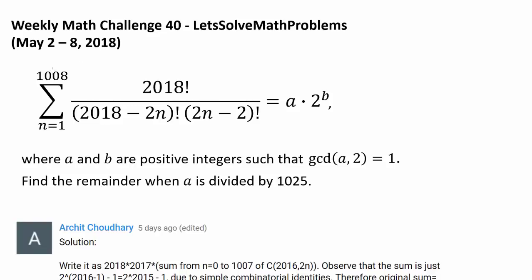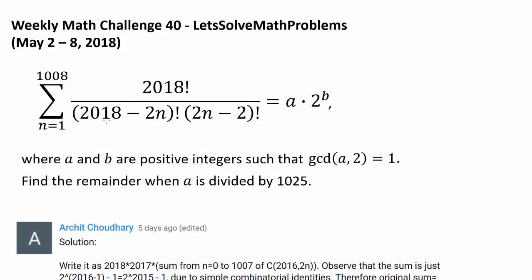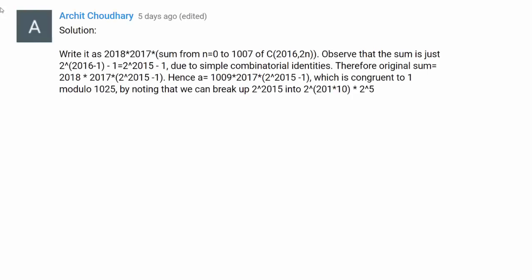This looks pretty challenging. We have a summation with a complex-looking expression inside, and we know this has to evaluate to A times 2 to the B power, where A and B are positive integers such that the greatest common divisor of A and 2 is 1. Before I go on, I want to recognize Archie Choudhary for being the very first person to correctly answer last week's challenge with the answer of 1.